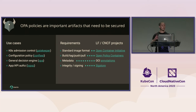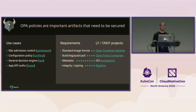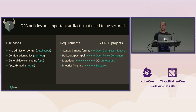Now, what do you need a secure software supply chain for? OPA policies are an important application artifact. You want to be able to build them into immutable images, and you want to be able to sign them. But the native format for OPA policies is actually a tarball, which doesn't lend itself well to any of these things. So you really want to be able to package them up, just like you do application code, into an OCI image.